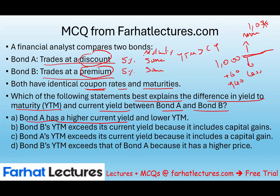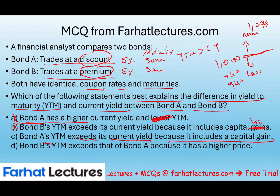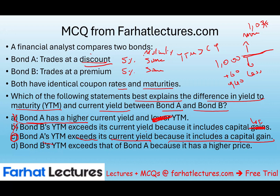So Bond A will have a higher YTM than its current yield because it's a discounted bond — the YTM includes the capital gain from the discount. Bond B will not have YTM exceed current yield because it was bought at a premium, meaning there's a capital loss. Bond A's YTM exceeds its current yield — that is correct and is answer C. Bond B's YTM exceeding Bond A's is incorrect; Bond A will exceed. So C is the correct answer.